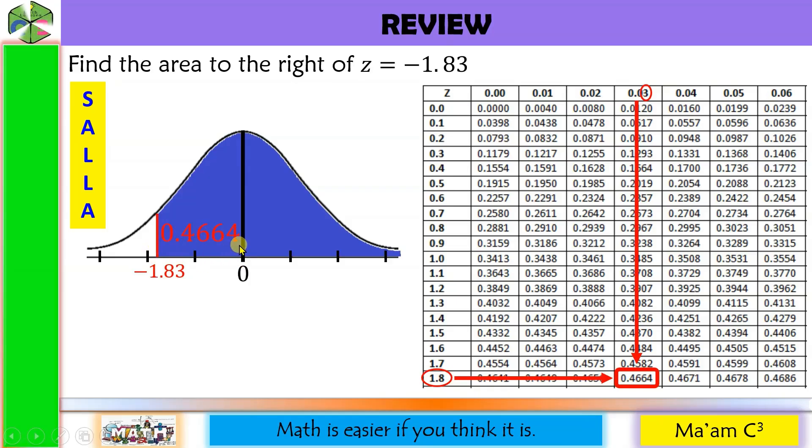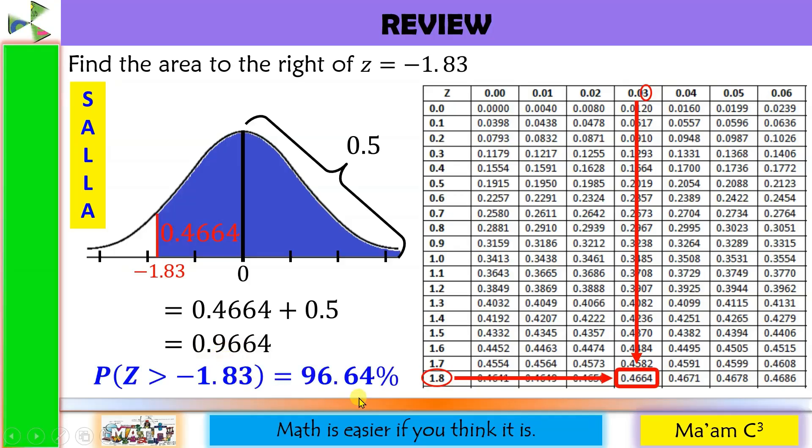0.4664 is the area from the mean up to negative 1.83. It's only this portion. But we are after from this up to this portion. We know that half of a normal curve is 0.5. So if we want this shaded region, we simply have to add 0.4664 to 0.5. And this will give us 0.9664, or 96.64%. Again, this is to the right of Z, meaning values of Z that are greater than negative 1.83.